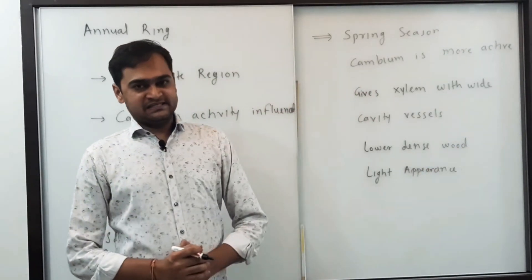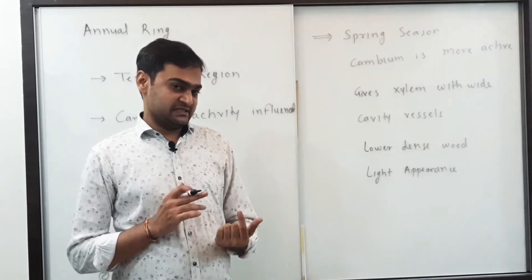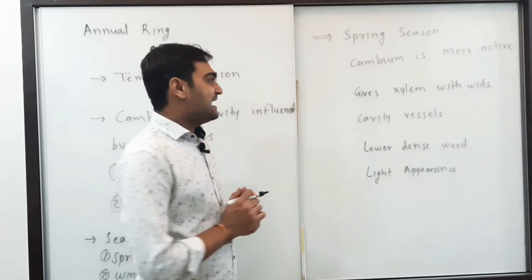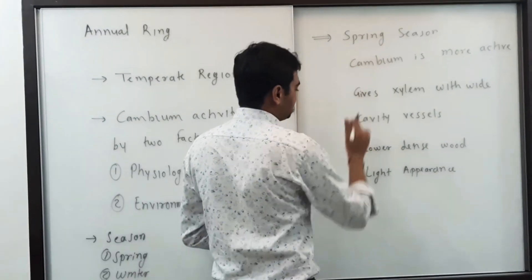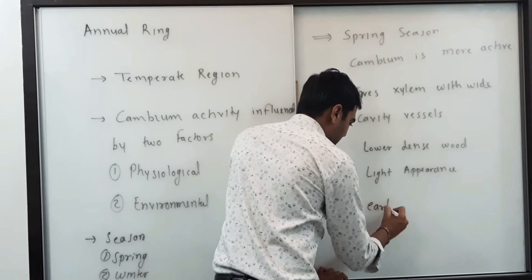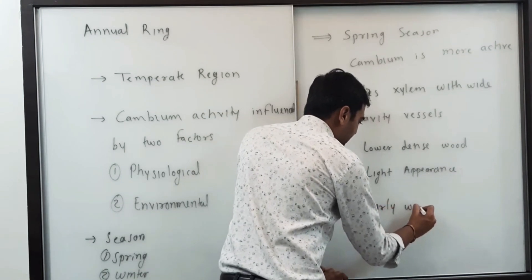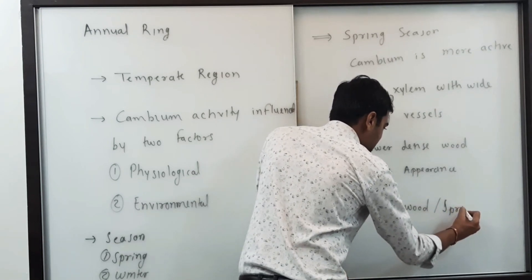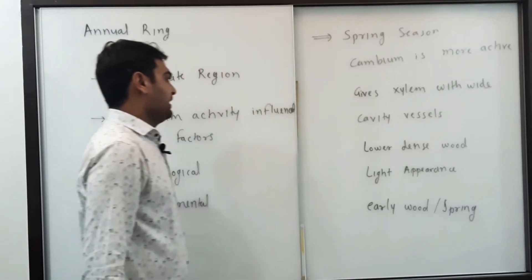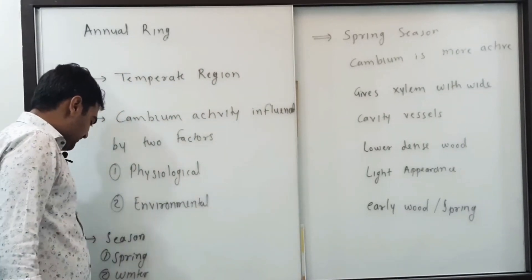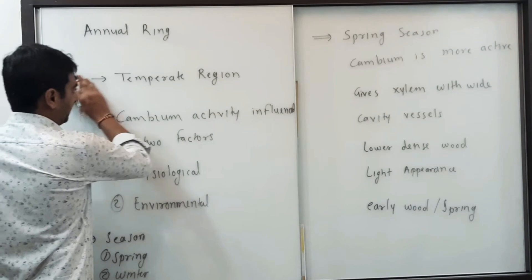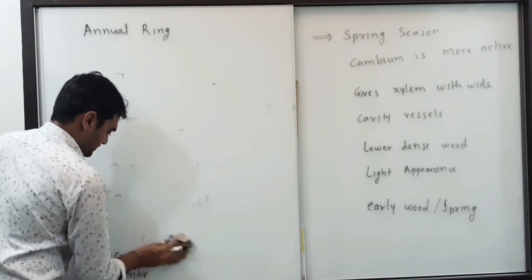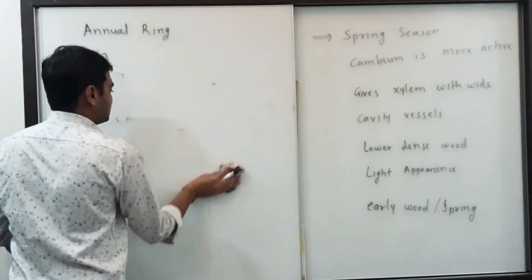In winter season the theme is opposite. Since the spring season comes first in the year, the wood formed in spring is called early wood, also called spring wood. Now we focus on the autumn wood, also called late wood, which is formed in the winter season.